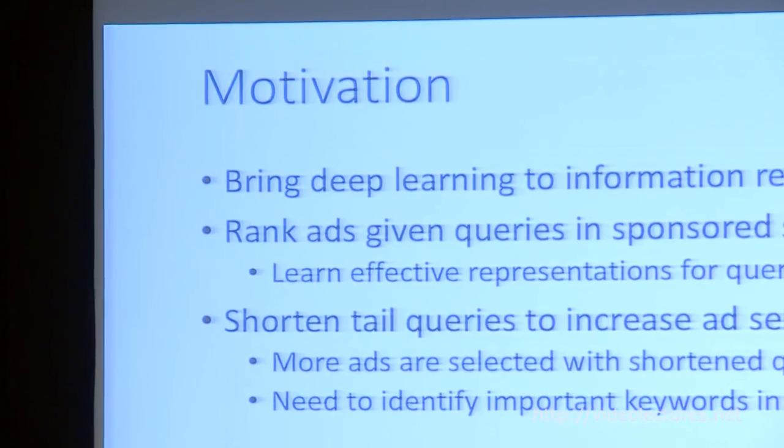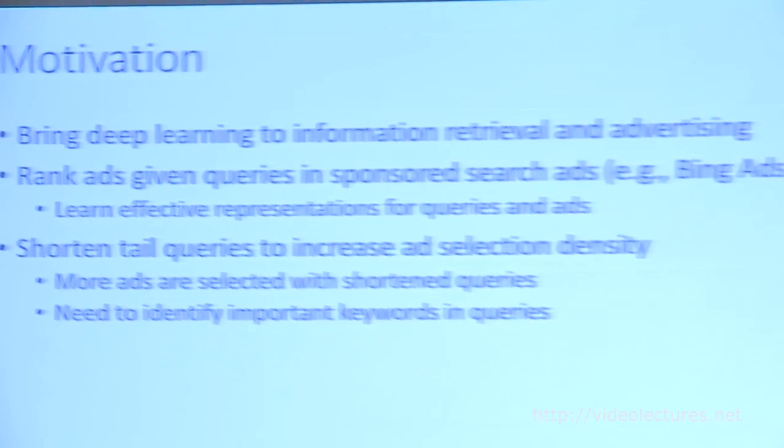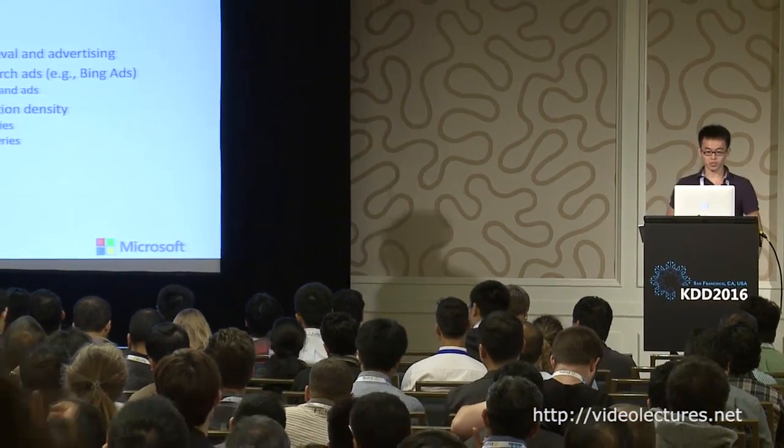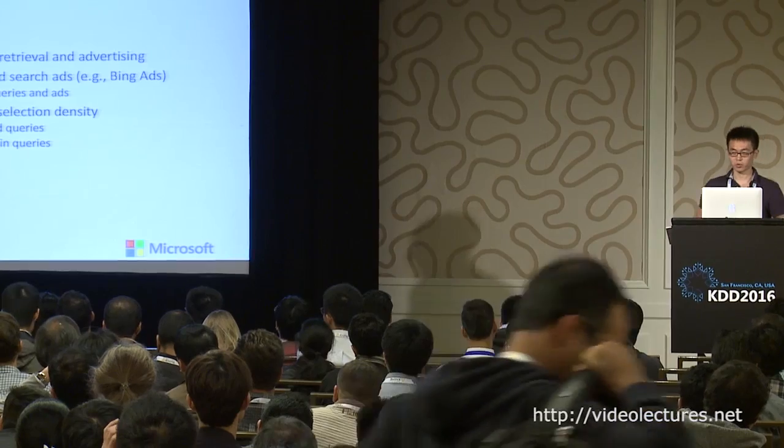The motivation of this work is to bring deep learning into the area of information retrieval and online advertising. In the context of sponsored search ads such as in Bing Ads, there is a need to rank ads given queries, which leads us to learn effective representations for both queries and ads. There's also a need to shorten tail queries to increase ad selection density, and to identify important keywords in queries.